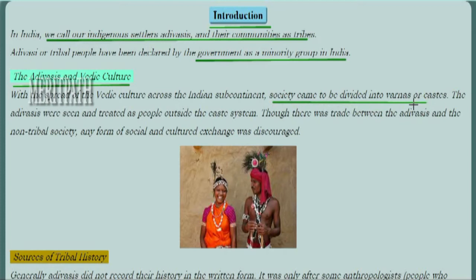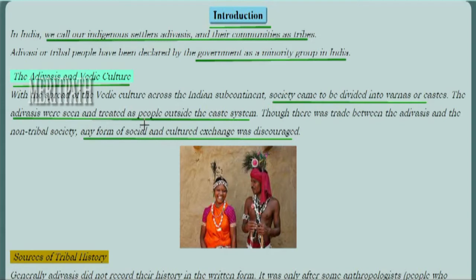The society started to be divided into varnas or caste systems during the Vedic period. In this caste system, the Adivasis were seen and treated as people outside the caste system — treated as lower caste people. Though trade existed between the Adivasis and the non-tribal society, any form of social and cultural exchange was discouraged.